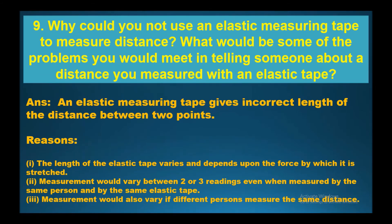What will be some of the problems you will meet in telling someone about the distance you measured with an elastic tape? An elastic measuring tape gives incorrect length of a distance between two points because the length of the elastic tape varies depending on the force by which it is stretched. Measurements will vary between two or three readings even when measured by the same person, and will also vary if different persons measure the same distance.